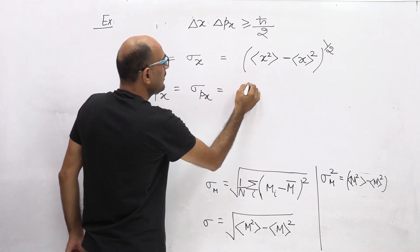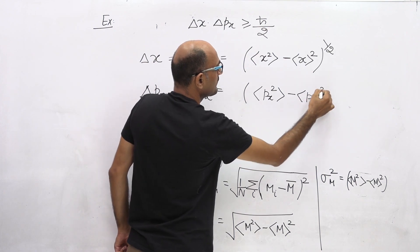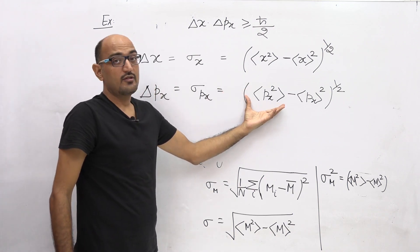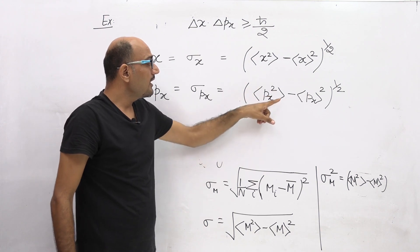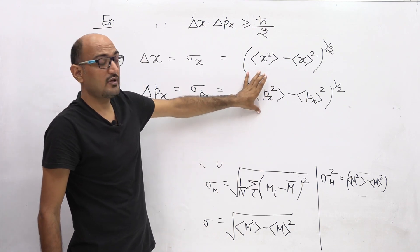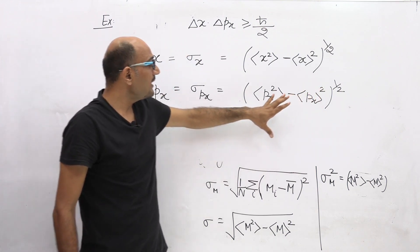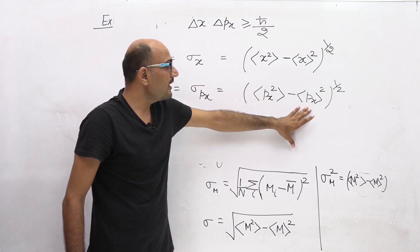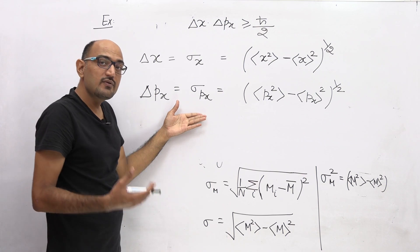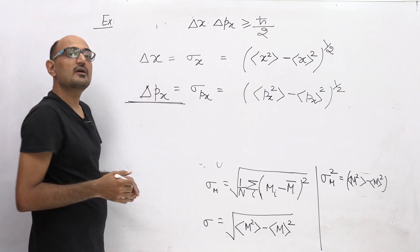So here we see: the bracket notation represents the average. The average of px-squared minus the square of the average of px — taking the square root of that gives the standard deviation in momentum during the measurement process, and that is what we call delta px in the Heisenberg Uncertainty Principle.